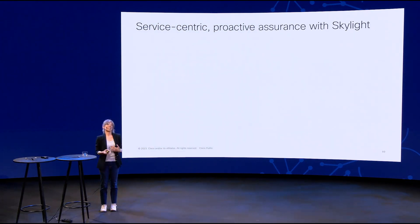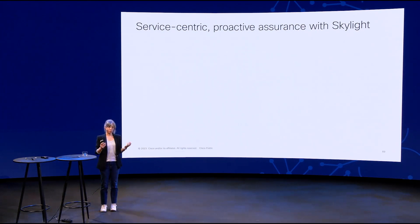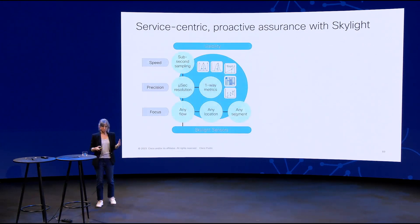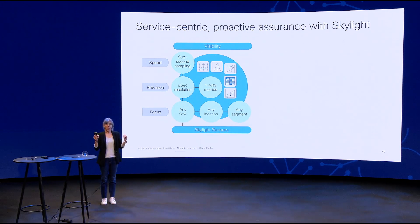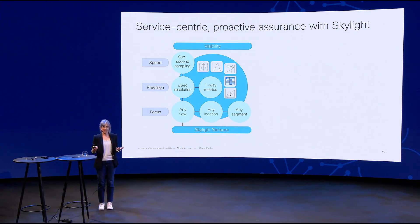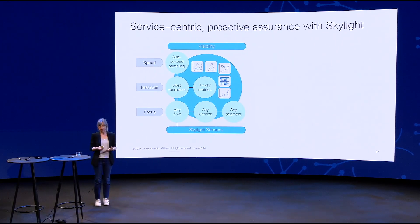So Skylight — basically what we are doing is providing information on how the end-to-end service is performing. It all starts with the data, which gives us this visibility. We collect end-to-end service assurance with our sensors, providing full visibility. We can monitor literally any flow, any service over the full network. We collect very good data, and that's important — good data gives you the right visibility. If you don't have the right resolution or granularity, you are going to be missing a lot of information. This is what we do with our Skylight sensors.